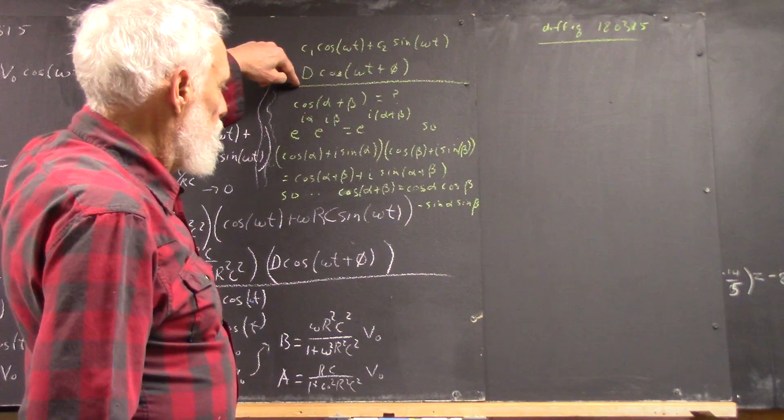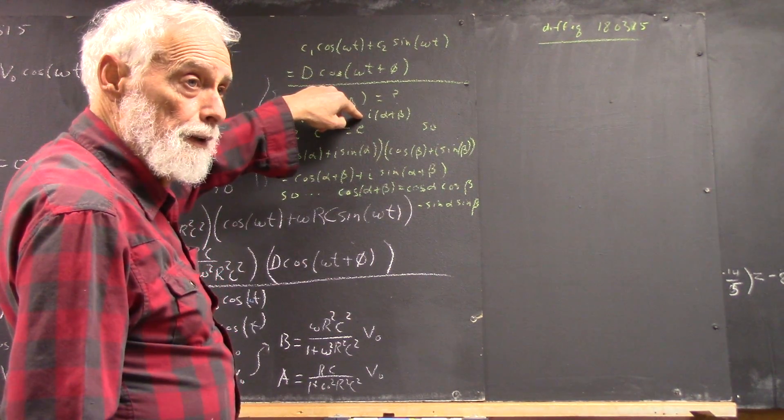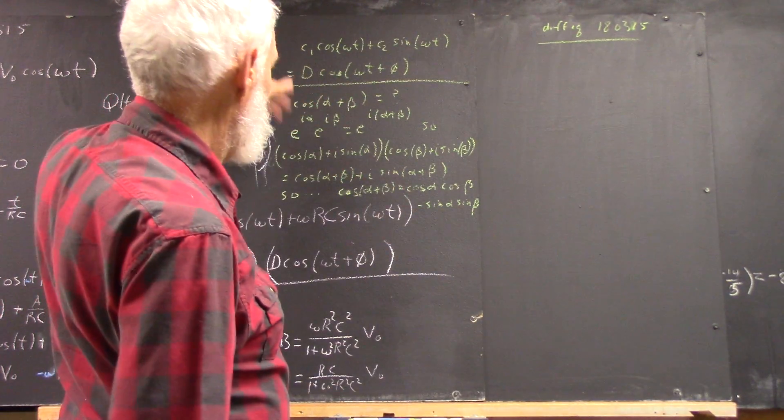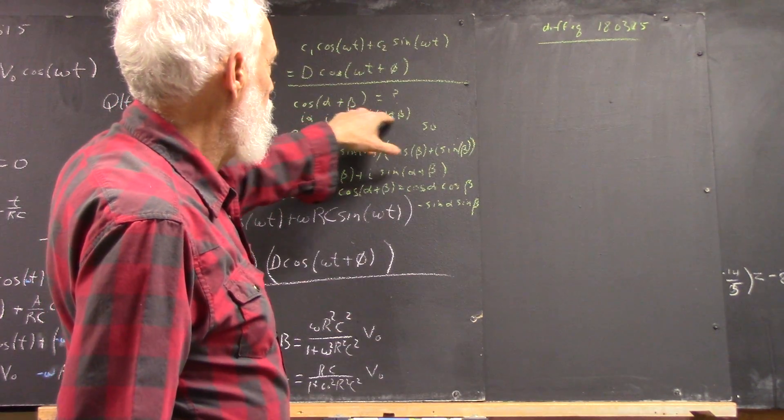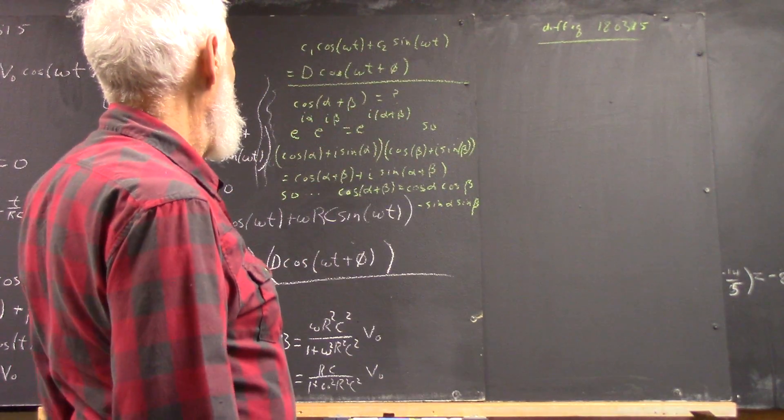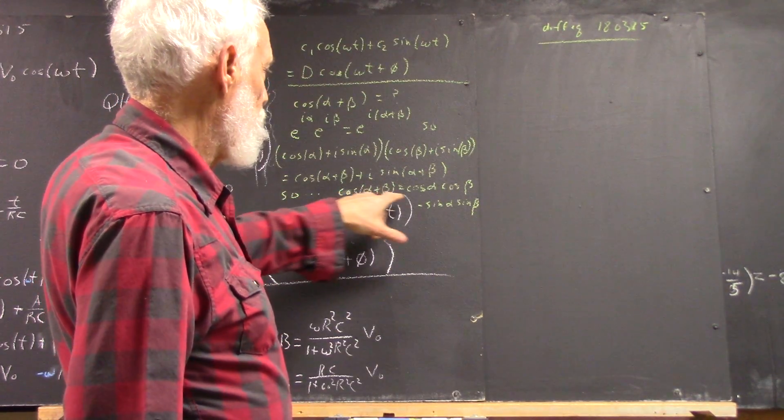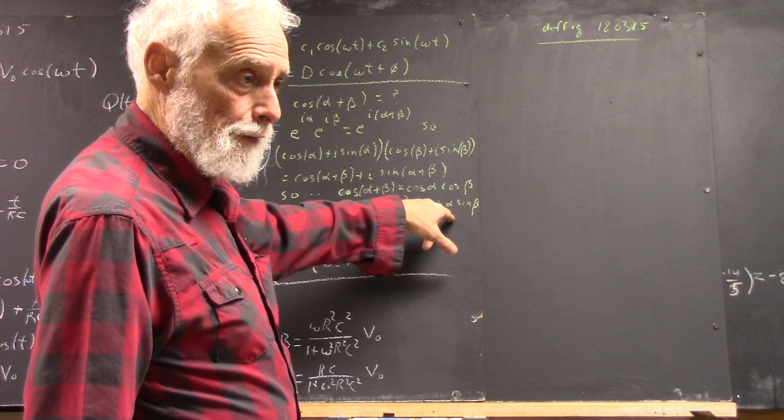We have this equal to this. We work out what the cosine of alpha plus beta is, for reasons that will be clear. We just set e to the i alpha times e to the i beta equal to e to the i alpha plus beta, and out of that pops out, among other things, the fact that cosine of alpha plus beta is cosine alpha cosine beta minus sine alpha sine beta, and we didn't have to look it up.